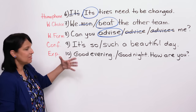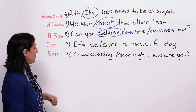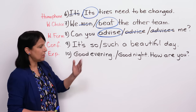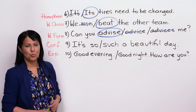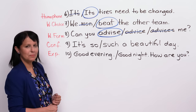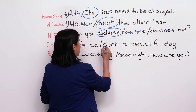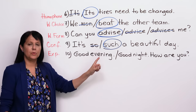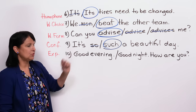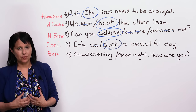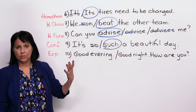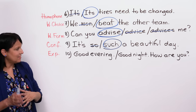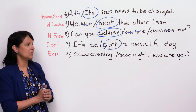Number nine is about confusing grammar. 'It's so a beautiful day' or 'It's such a beautiful day' — what's right? It should be 'such a beautiful day.' After 'such,' we're looking for a noun or a noun phrase. After 'so,' we're usually looking for an adjective or an adverb. So we could say 'it's so beautiful today' or 'it's such a beautiful day.' Each of these points you have to master.